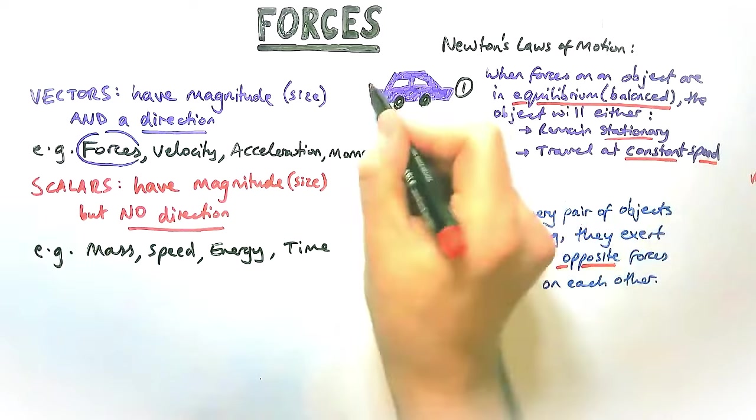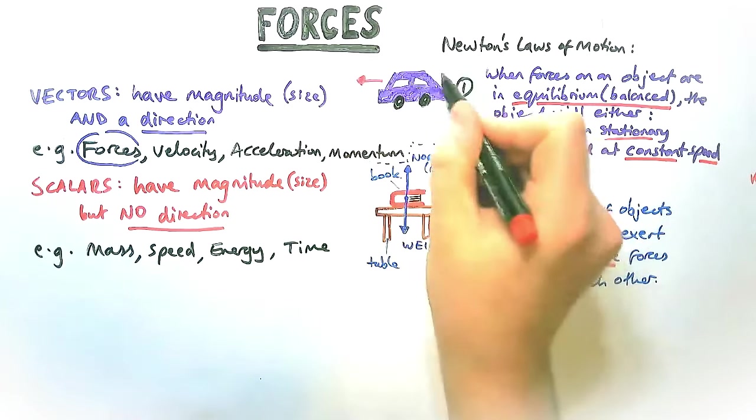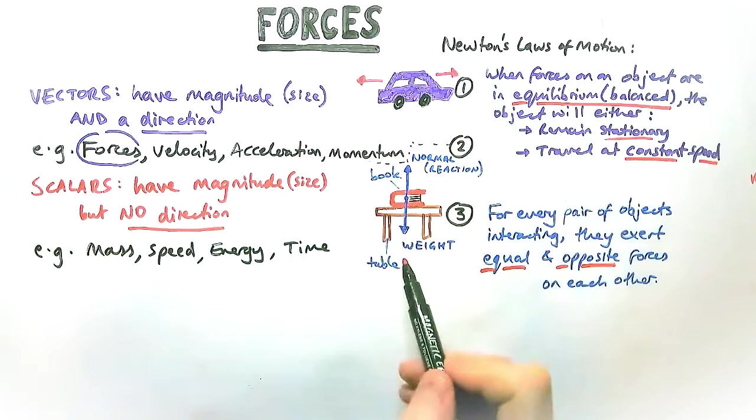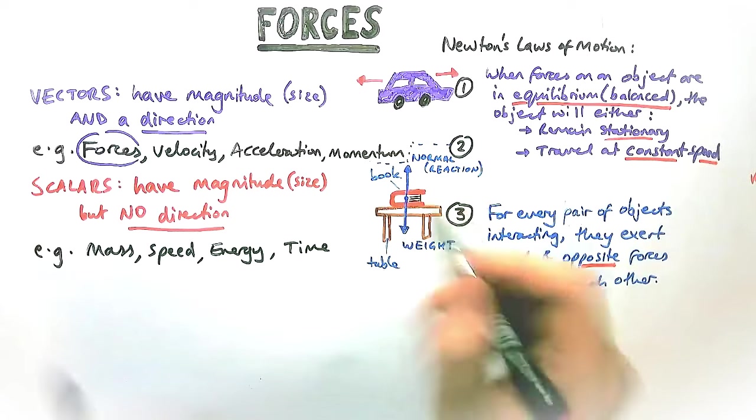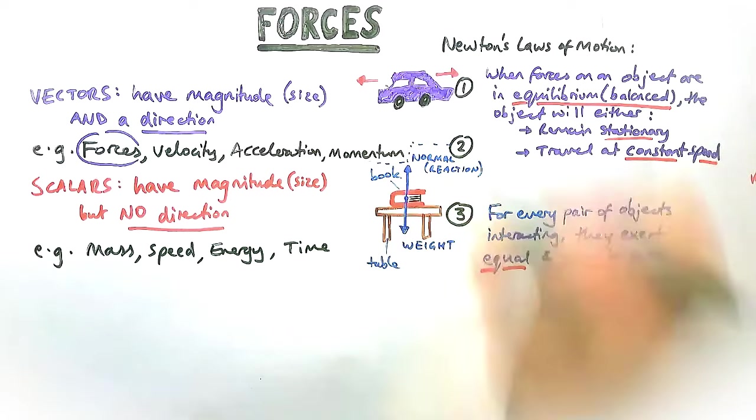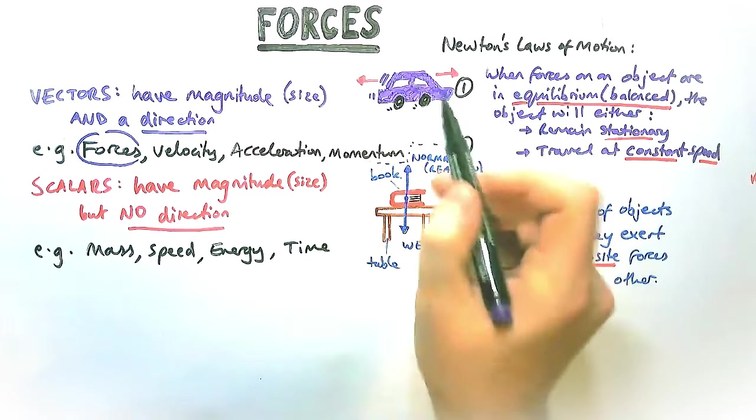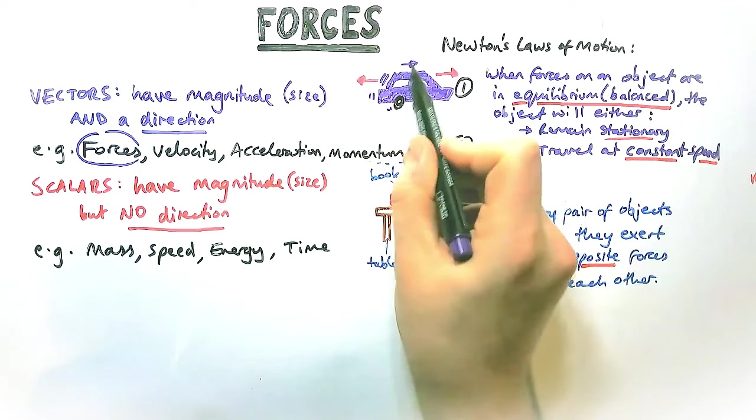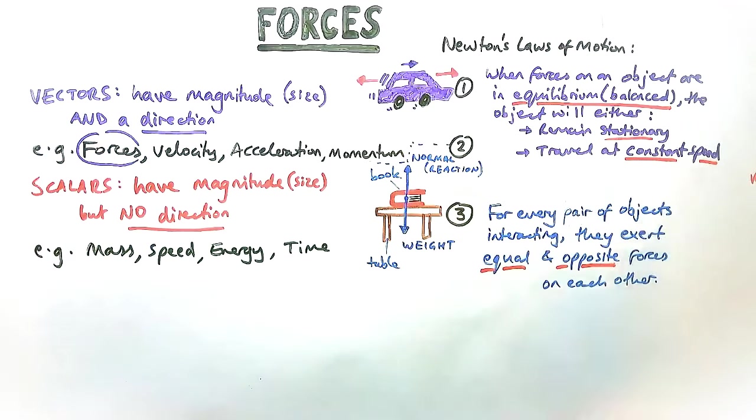In this example for the car, if it's already moving, let's say it's traveling down the motorway and the forces are balanced on it, it's not stationary initially. It's moving already, so therefore it is going to be traveling at a constant speed. If, however, it's parked in your driveway, it's going to stay parked in your driveway if the forces on it are balanced.